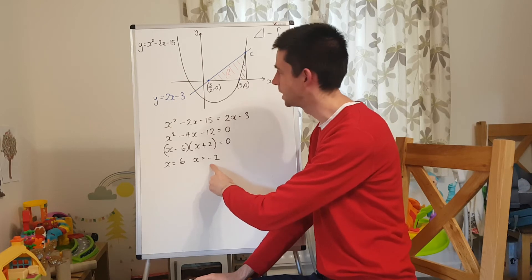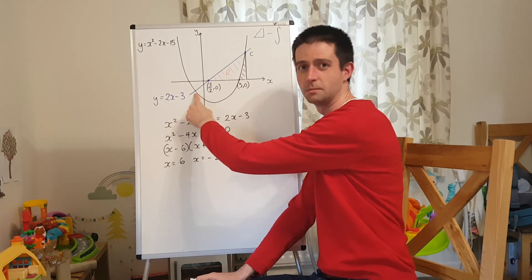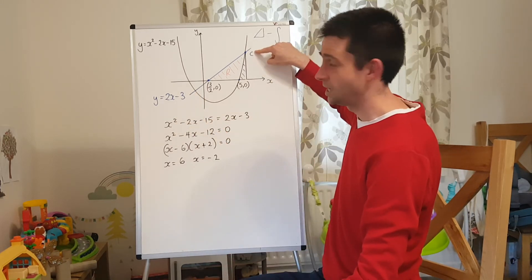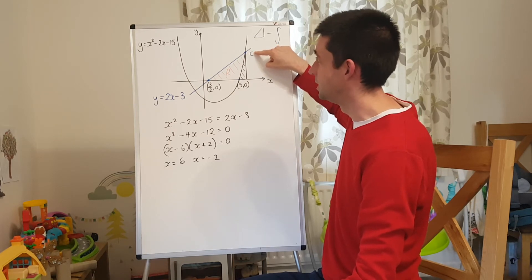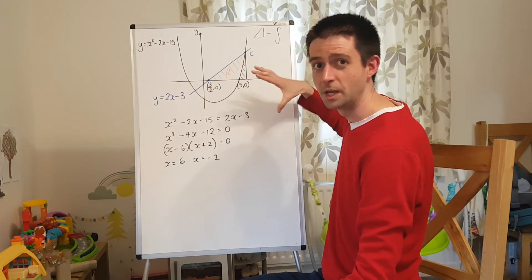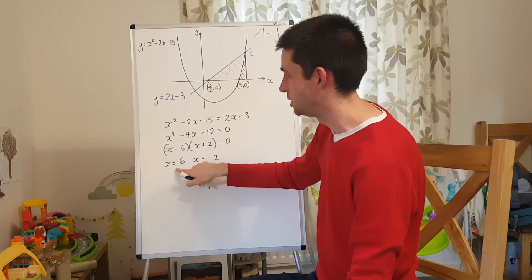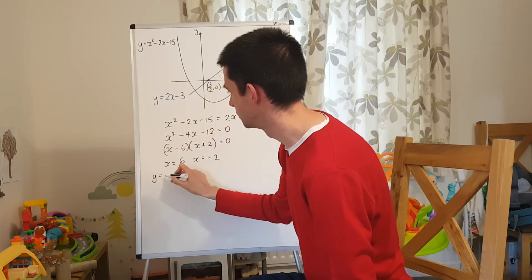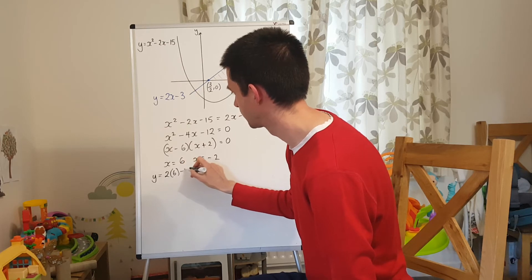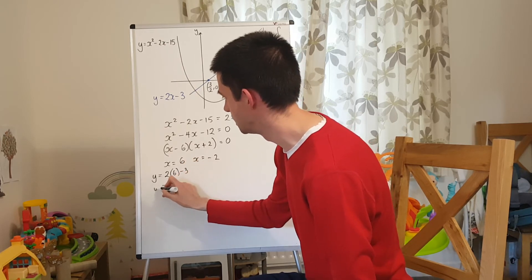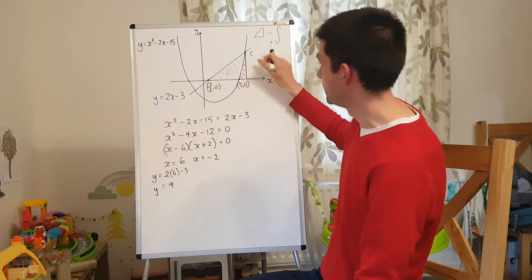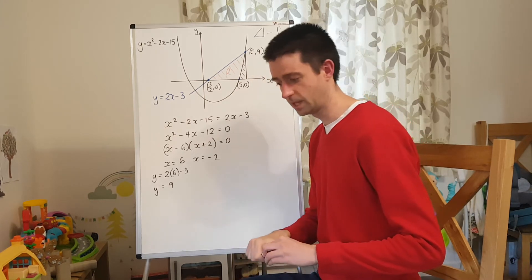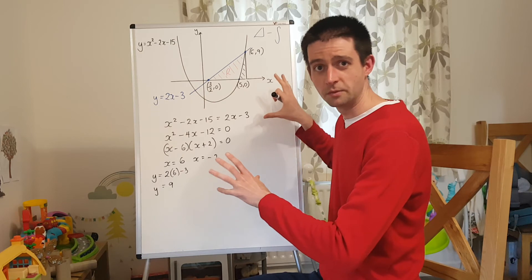x equals 6. Where does x equals minus 2 come from? It's the other point of intersection between the line and the curve down here. So I'm not worried about that one. Now, however, because the point C here is not on the axis, I know that x is 6. I need to find the y-coordinate. I'm going to need both pieces of information to solve this problem. So I use my value x equals 6 and I substitute it into one of the two equations. So I'm going to substitute it into y equals 2x minus 3, which is going to give me 9, which means that the coordinate of this point here, C, is 6, 9. So now I've got all the coordinates that I need to find the area.